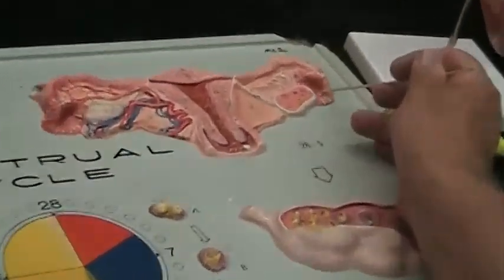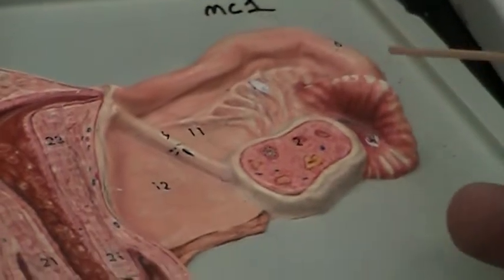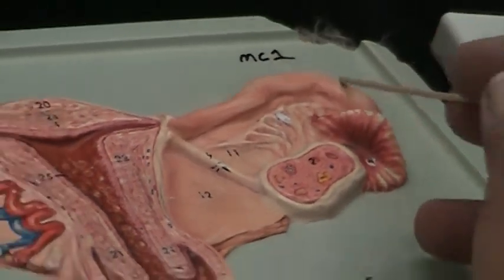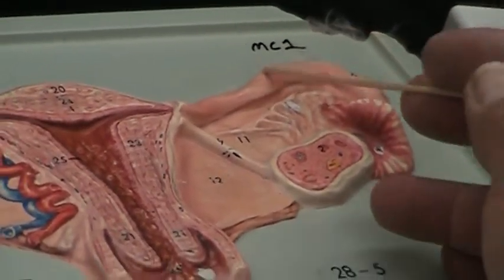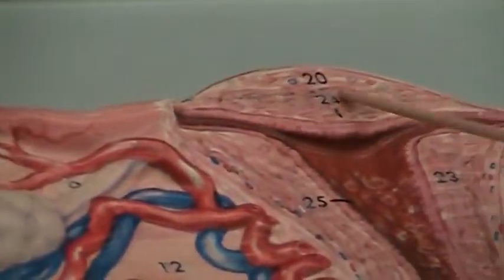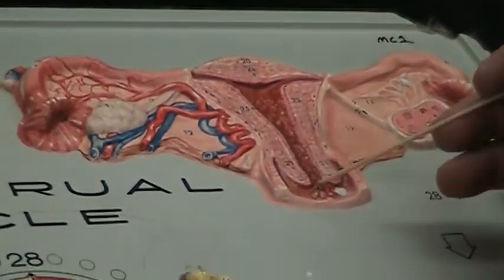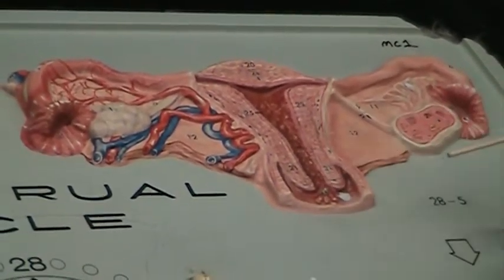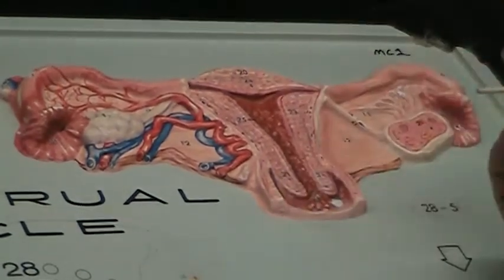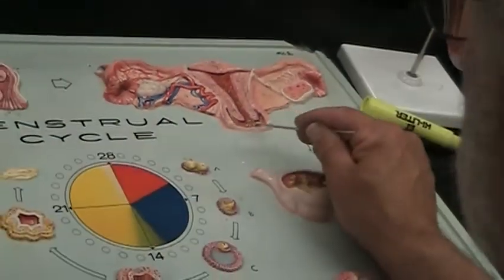Here you have the fimbria, here you have the ampulla, remember that this time, here you have the isthmus coming through. There's the fundic portion because it's superior. Here's the body, here you have the cervix, internalized, externalized, shown better on another model. Here's the beginning of the isthmus.